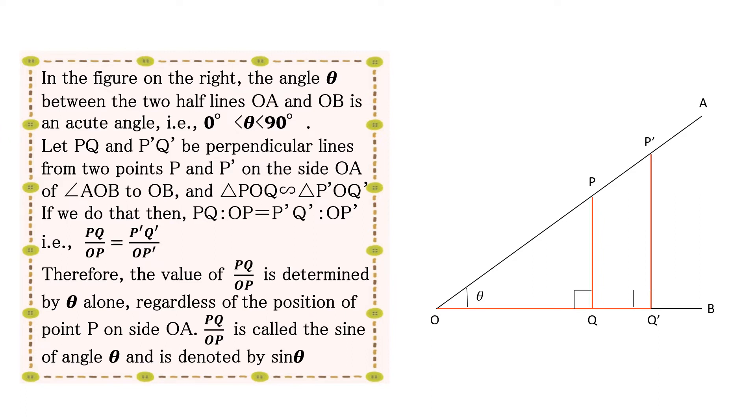Therefore, the value PQ over OP is determined by theta alone, regardless of the position of point P on side OA. PQ over OP is called the sine of angle theta and is denoted by sine theta.